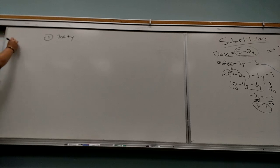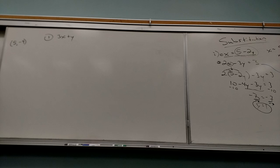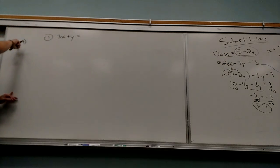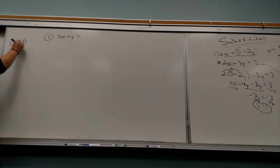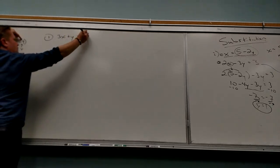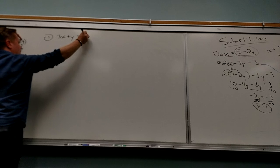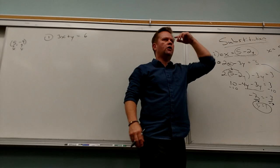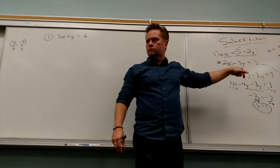Somebody give me a number — 5. Now somebody give me a negative number — negative 9. So let's say that's what I want the answer to be. I'm going to put 3x plus y, but what has to go here so that's the answer? X is 5, Y is negative 9. So 3 times 5 is 15. 15 minus 9 is 6. So I wrote 3x plus y equals 6, and those are the numbers I started with.